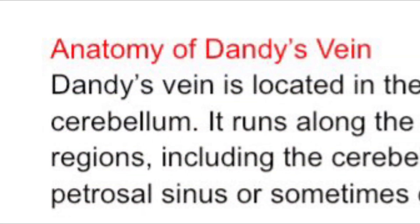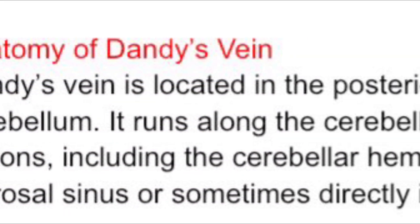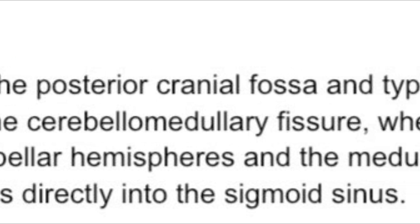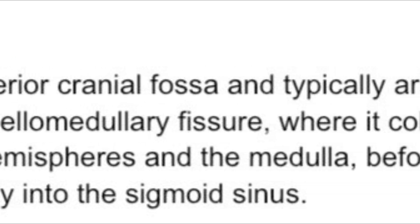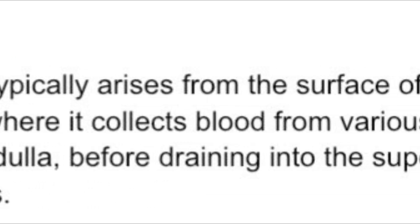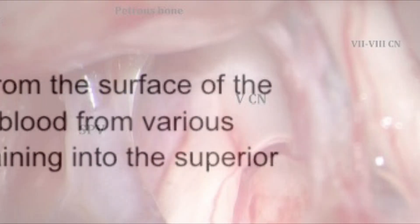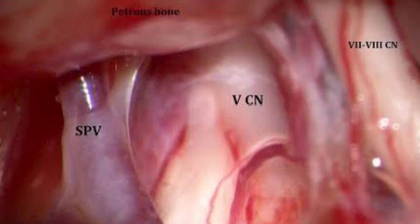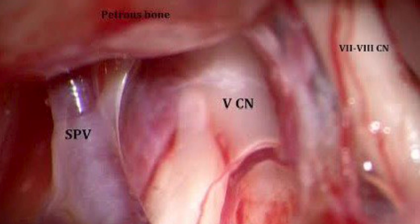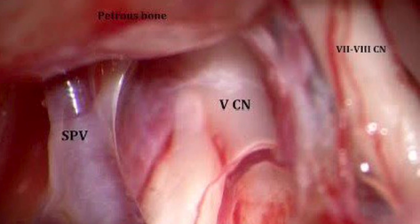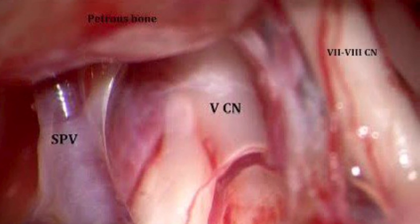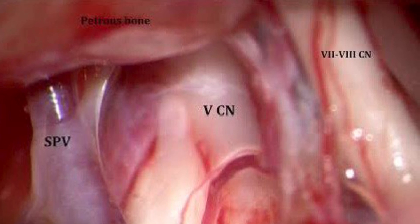Dandy's vein is located in the posterior cranial fossa and typically arises from the surface of the cerebellum. It runs along the cerebellum medullary fissure, where it collects blood from various regions, including the cerebellar hemispheres and the medulla, before draining into the superior petrosal sinus or sometimes directly into the sigmoid sinus.